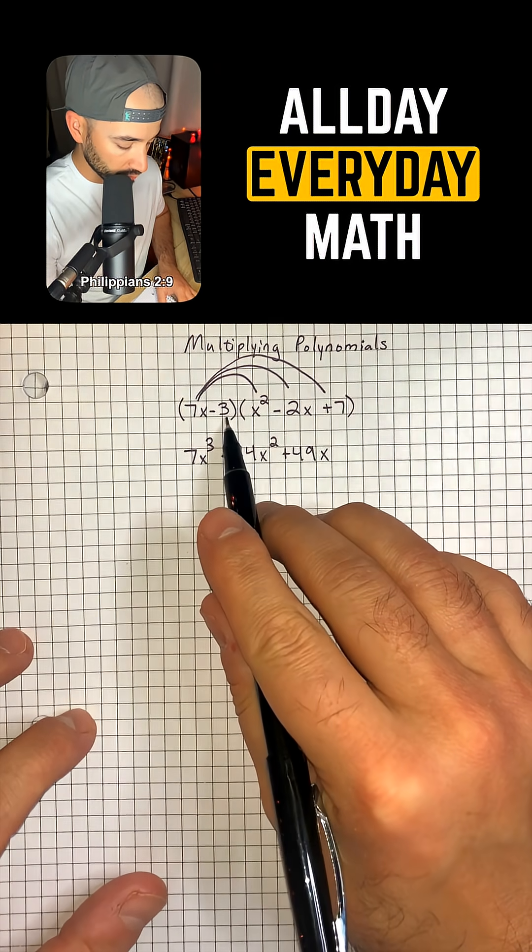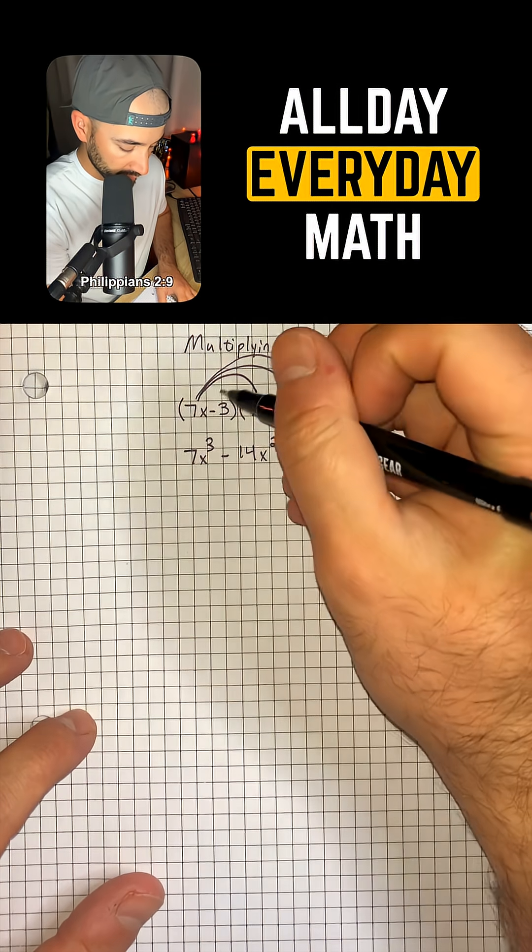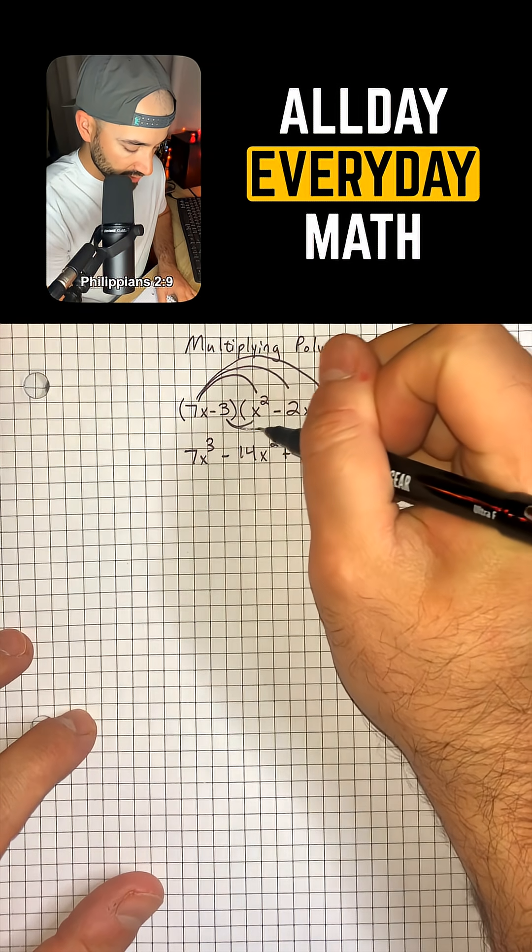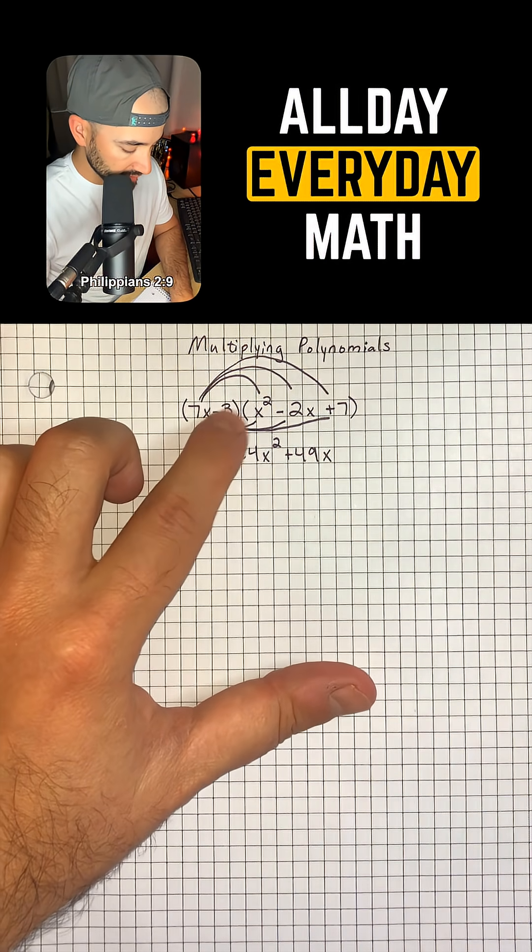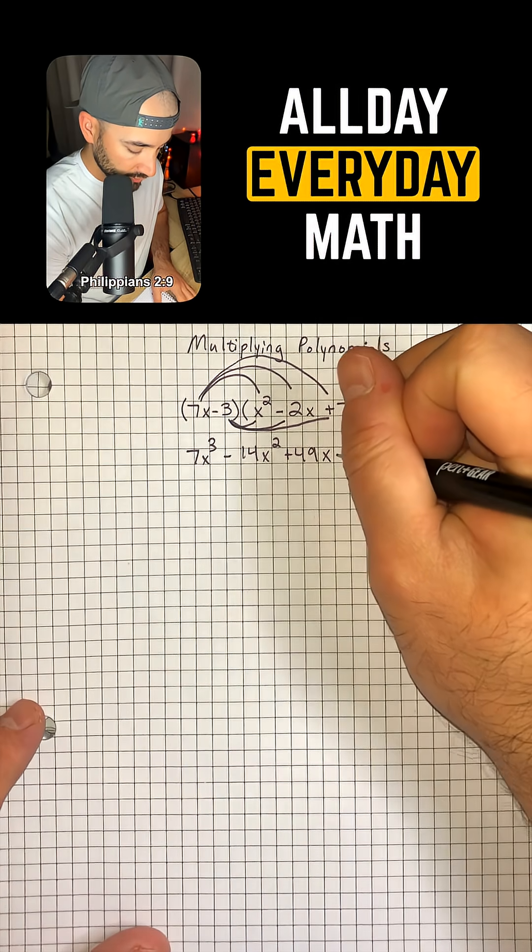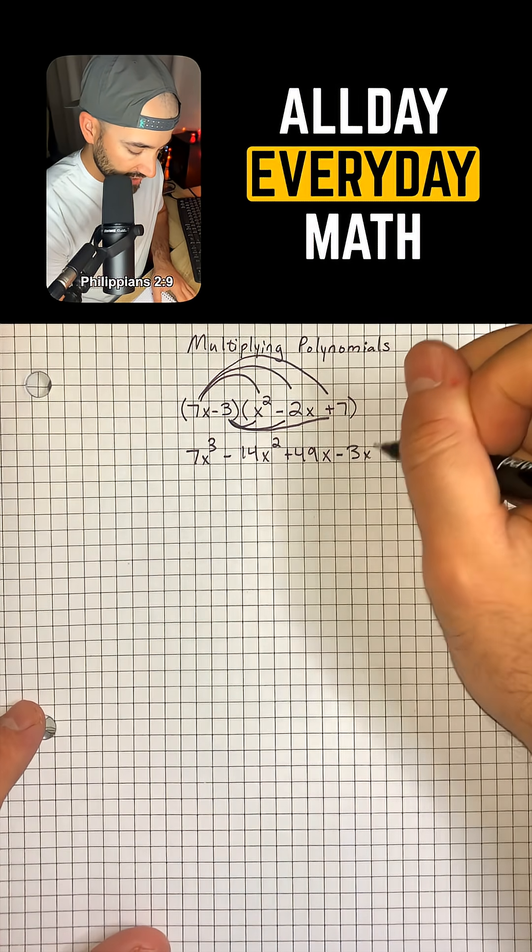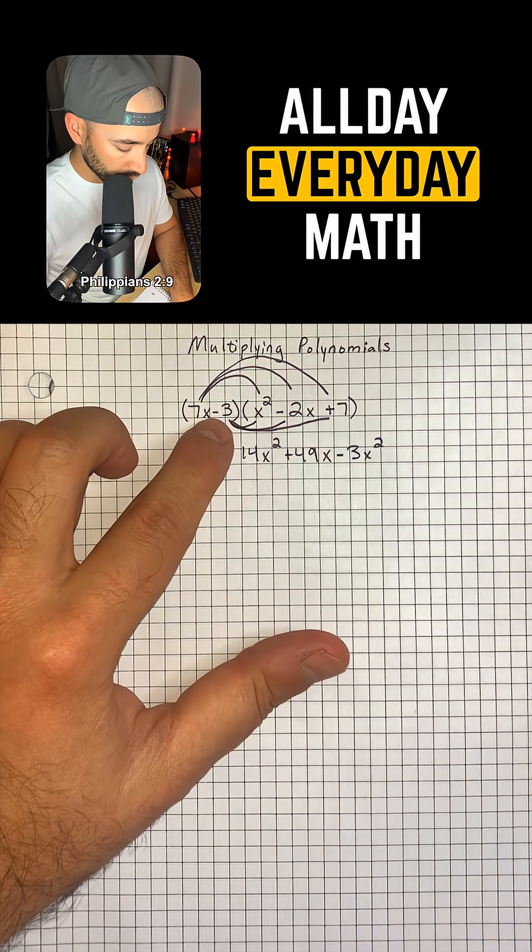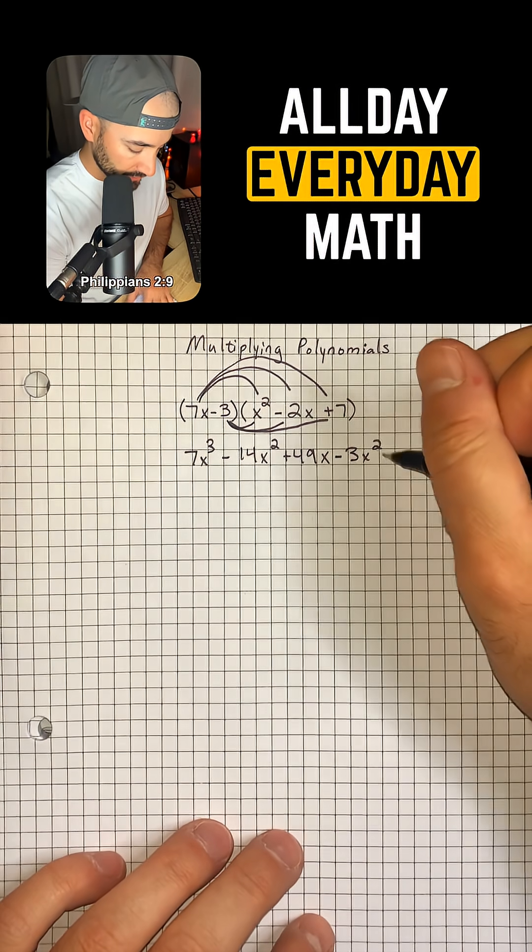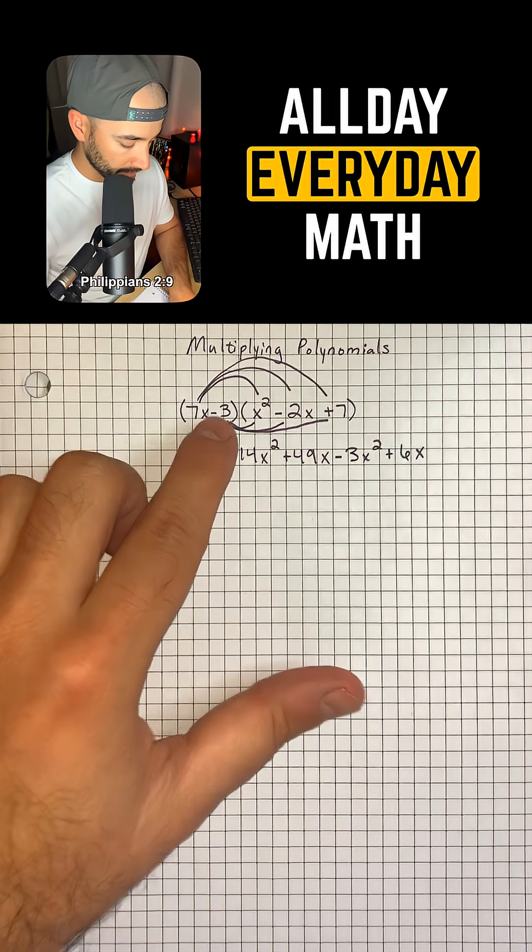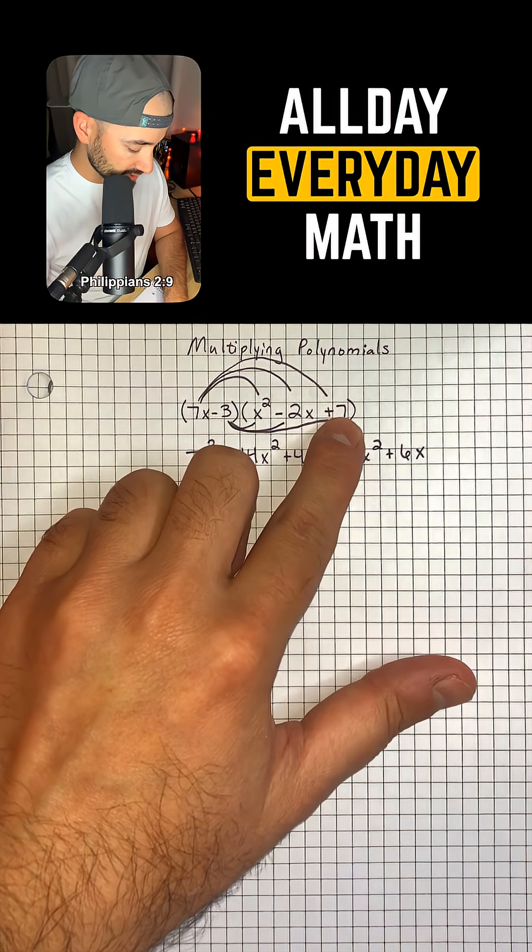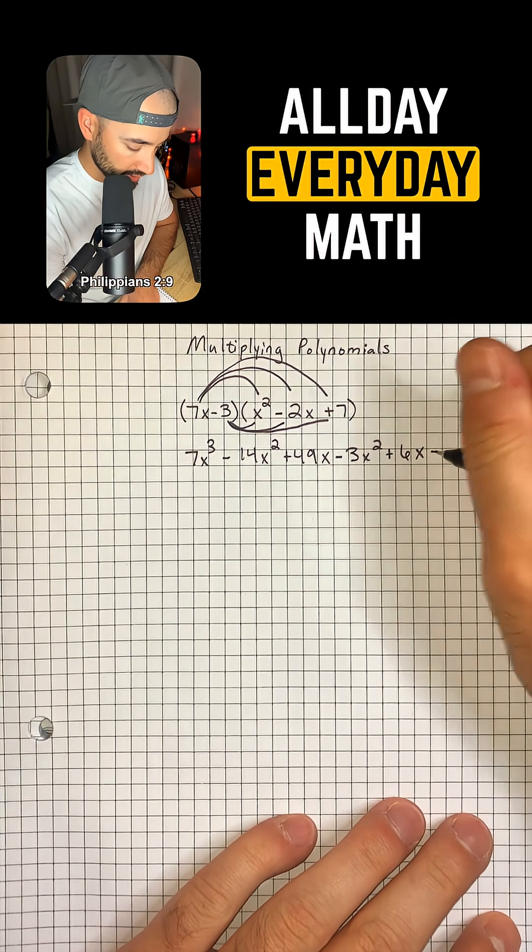Now we're going to do the second term. So negative 3 times each term in the second parentheses, and that's going to give us negative 3 times x squared, so negative 3x squared. Negative 3 times negative 2x will give us positive 6x. And then negative 3 times positive 7 is negative 21.